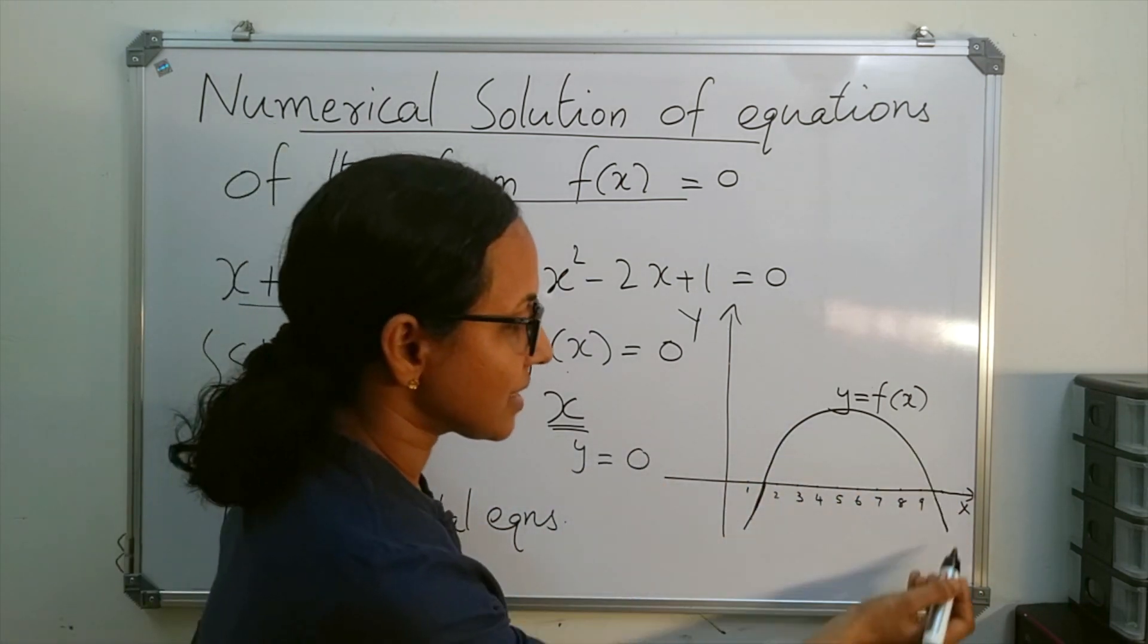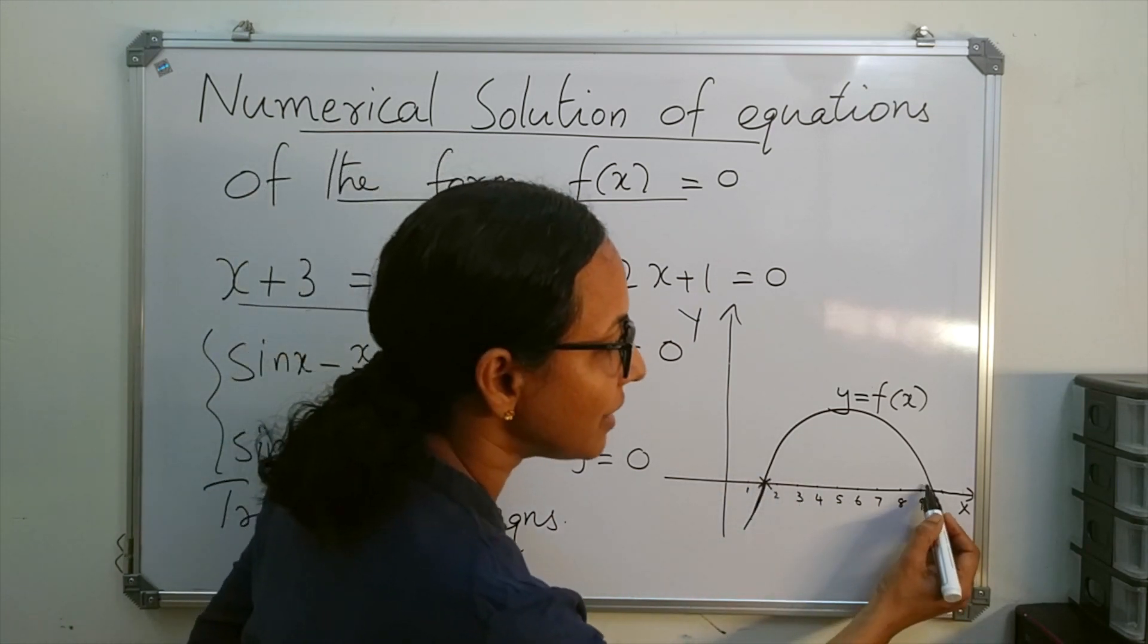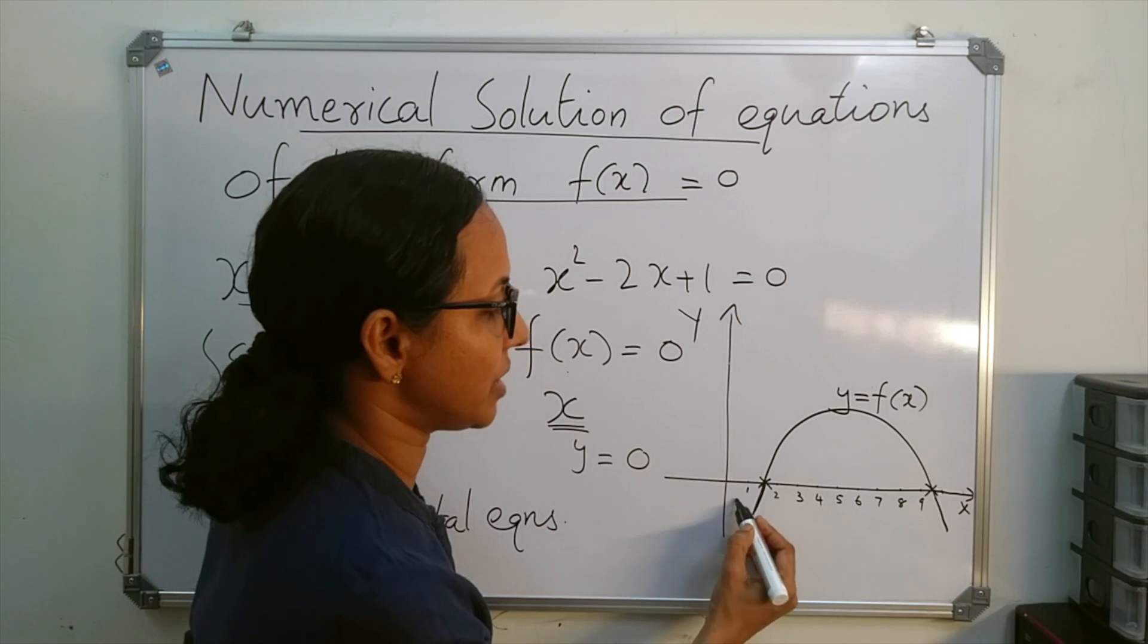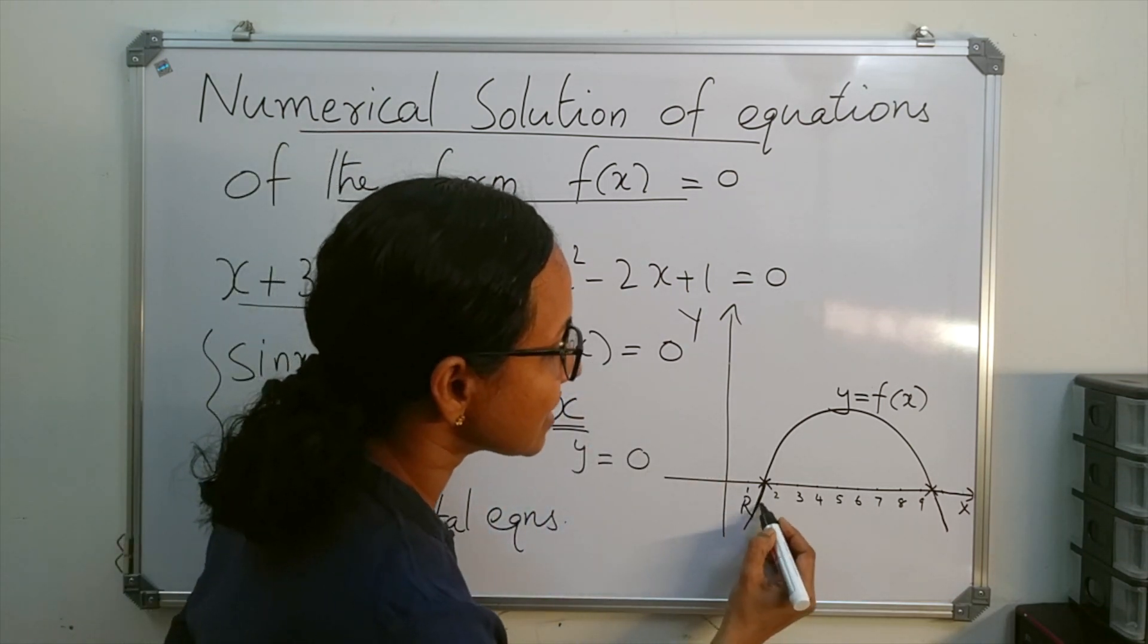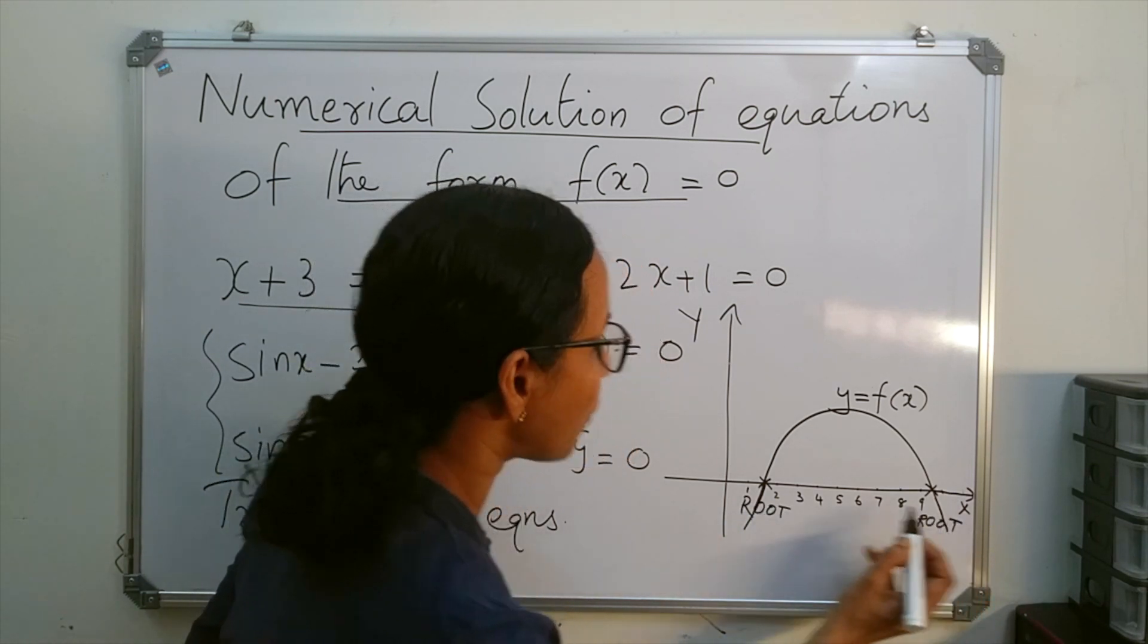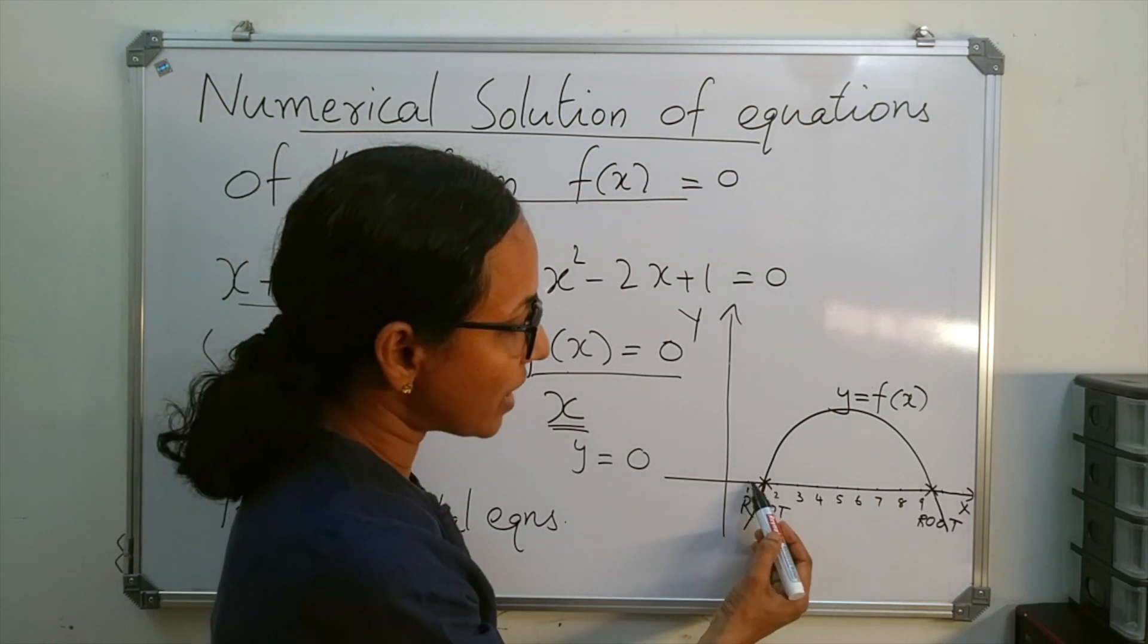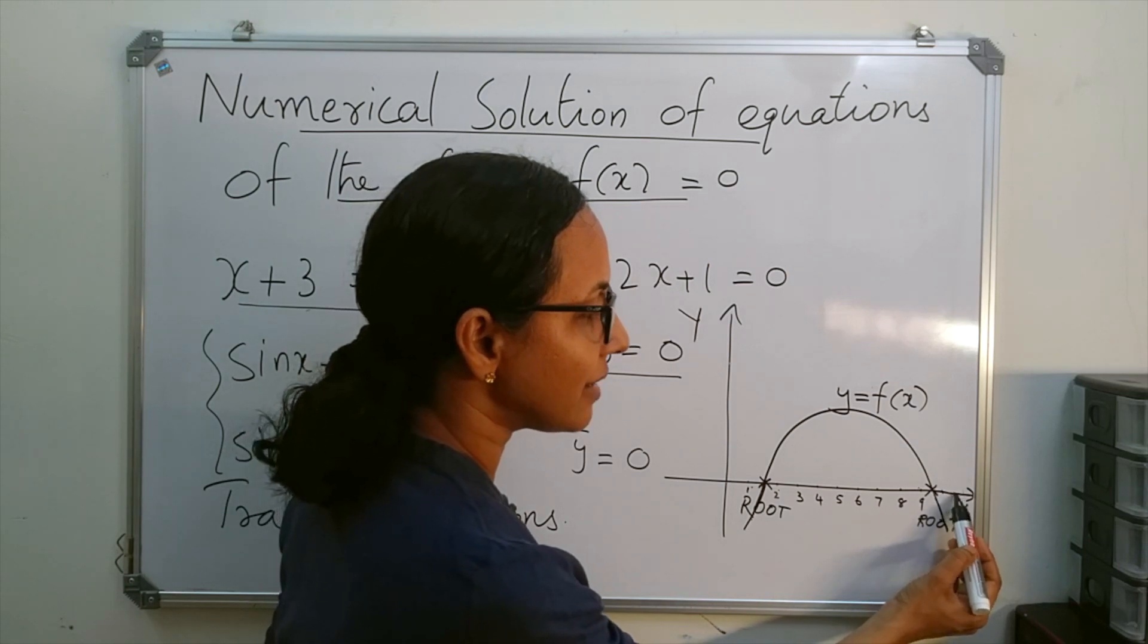In this case, at this point y = 0, and at this point also y = 0. Therefore, for this graph there are two solutions for the equation f(x) = 0. This is the first root and this is the second root. This root lies between 1 and 2, and this one lies between 9 and 10.